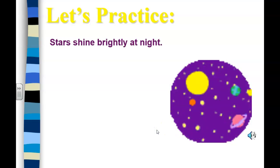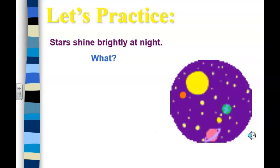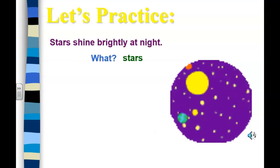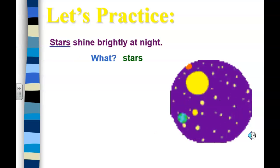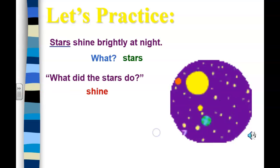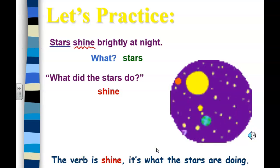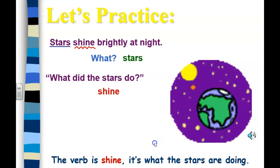'Stars shine brightly at night.' What is our sentence about? The stars — that's your subject. What do the stars do? They shine. Shine is your verb, your action word.